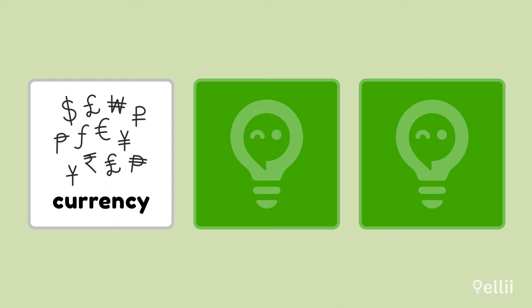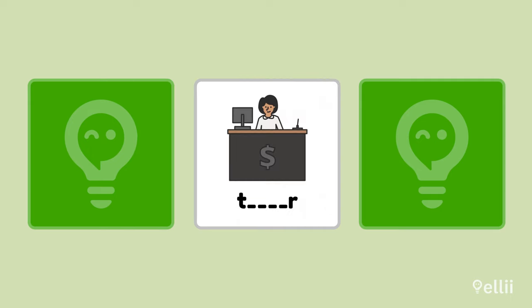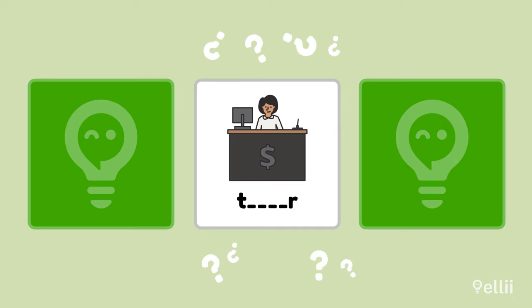Currency. Did you remember to use two R's? Moving on. Who's this person? Teller. Notice that there are two L's in this word.